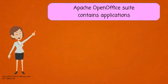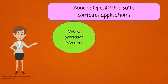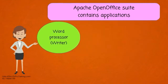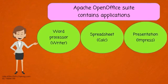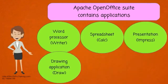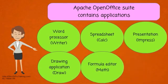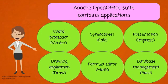Apache OpenOffice suite contains the following applications: a word processor application called Writer, a spreadsheet application called Calc, a presentation application called Impress, a drawing application called Draw, a formula editor called Math, and a database management application called Base.